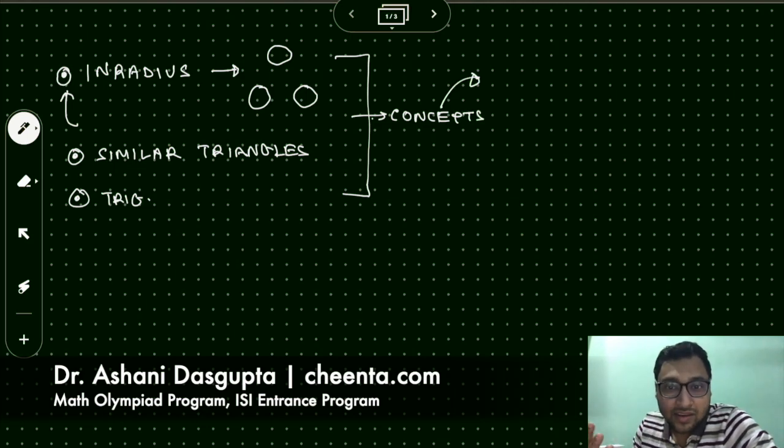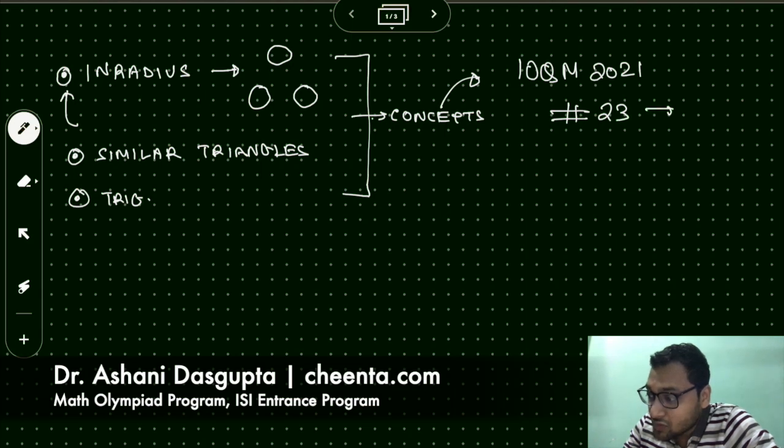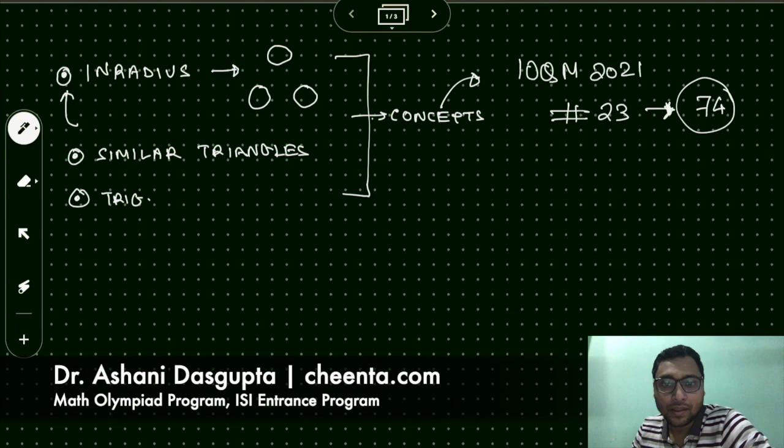These are the concepts and the application problem. The way we have these videos is we have the concept and then an application problem, and that one is IOQM 2021 problem number 23. If you're just for the answer to that, the answer is 74.